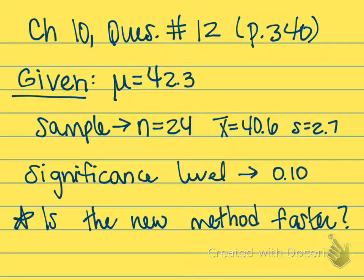The management of Wide Industries is considering a new method of assembling the golf cart. The present method requires a mean time of 42.3 minutes to assemble the cart. So that's the current average for the population using the current method that they have.